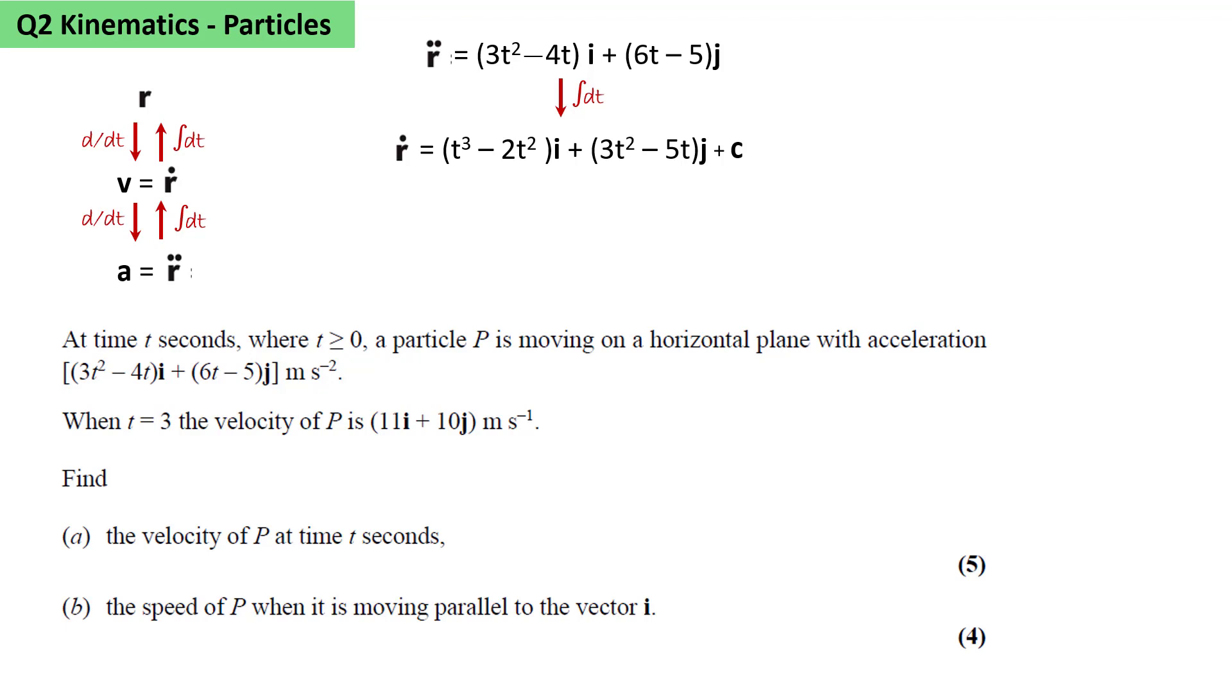But remember, there's a constant of integration, c, which is itself a vector. We're told when t = 3, the velocity of P is 11i + 10j. So if we substitute t = 3 into this equation, we get 11i + 10j = 9i + 12j + c. From this, we calculate c = 2i - 2j.